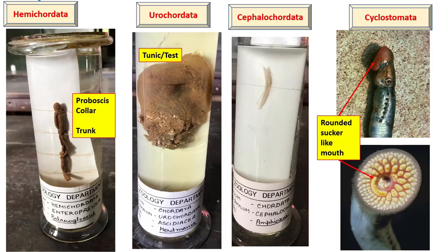Cephalochordata. Cephalochodates persist the notochord throughout the life, and it extends in front up to the head — that's why they are called Cephalochordata, 'cephalo' meaning head. The example is Amphioxus.